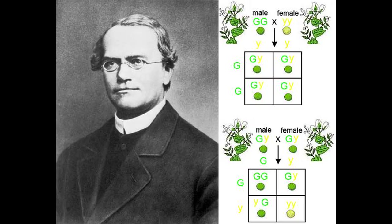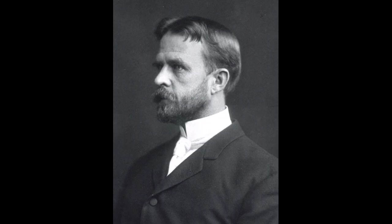Genetics went from traits having no established mechanism of inheritance, to traits being passed in a discrete but unidentified manner, to researchers establishing the actual molecule of inheritance, to researchers describing in full the structure of that molecule. Right around 1900, Gregor Mendel and his laws of inheritance were rediscovered, solidifying the idea that variations were passed in discrete, not blended, units. Shortly thereafter, Thomas Hunt Morgan and colleagues worked with the fruit fly Drosophila melanogaster, teasing out concepts like chromosomal inheritance, recombination and linkage maps, to provide the foundations of modern genetics.